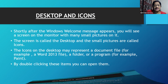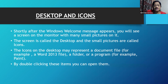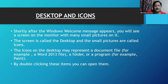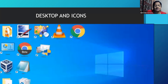Shortly after the Windows welcome message appears, you will see a screen on the monitor with many small pictures on it. The screen is called the desktop, and the small pictures are called icons. The icons on the desktop may represent a document file — for example, a Word 2013 file — a folder, or a program, for example, Paint. By double-clicking these items, you can open them.